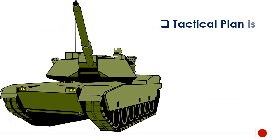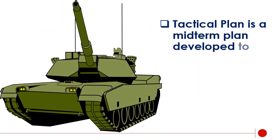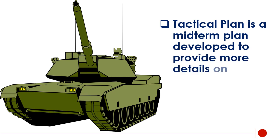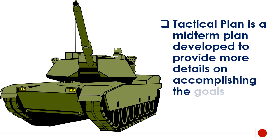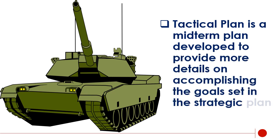A tactical plan is a mid-term plan developed to provide more details on accomplishing the goals set in the strategic plan. Tactical plans achieve the goals of the strategic plan and are shorter in length — 6 to 18 months.